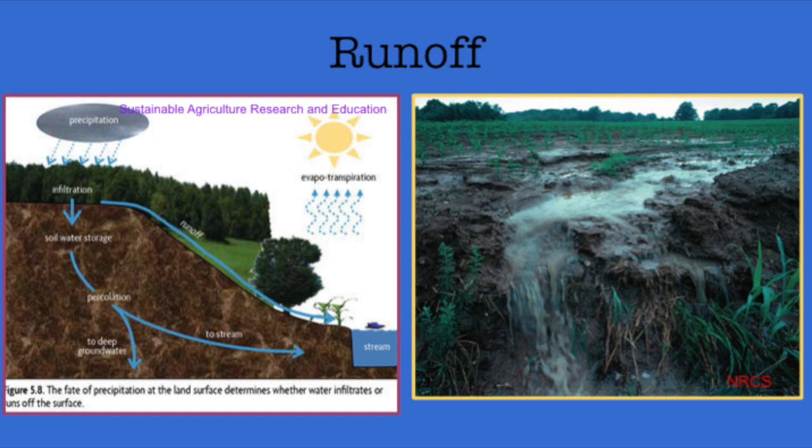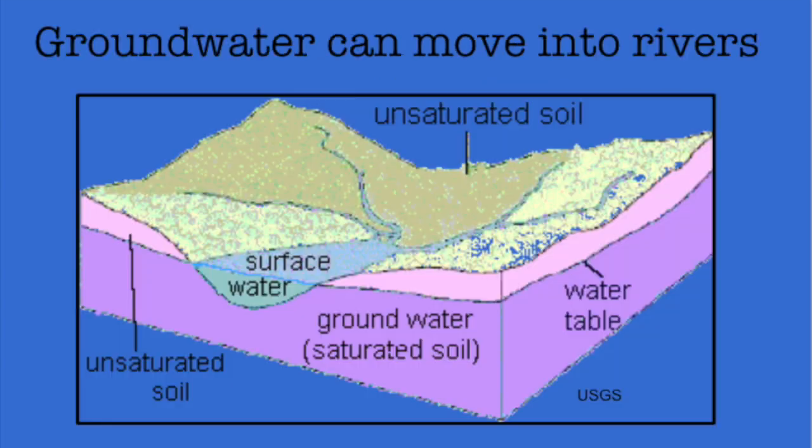These rills combine to form channels, which then join together, forming a river. Water can also be added to a river from groundwater. In areas with a high water table, water can move into a river instead of staying in storage underground.